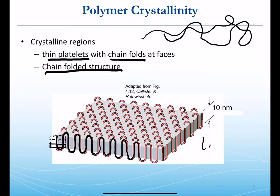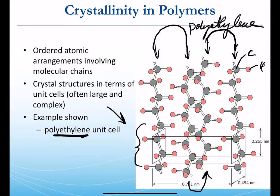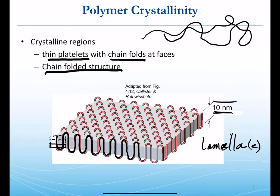This platelet is also sometimes termed a lamella — or plural, lamellae. They would be very thin. Notice the thickness: 10 nanometers. Our unit cell was about a quarter nanometer, so there might be four unit cells to a nanometer — meaning upwards of 40 unit cells build up the thickness of this lamella.